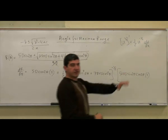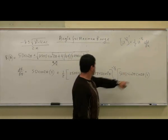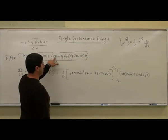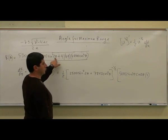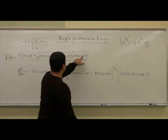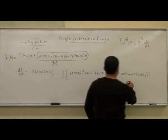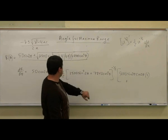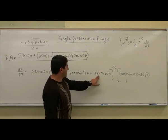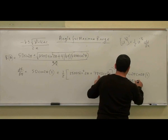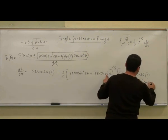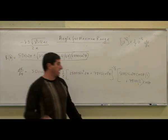You've got to make sure you do all of the derivatives. This is the derivative of this one: 2 came down, made it 5,000, sine 2 theta, then the derivative of sine, which is cosine, times the derivative of 2 theta, which is 2. Then for the next term, the 2 comes down, so we have 7,840 times 2 times cosine times the derivative of cosine, which is negative sine.